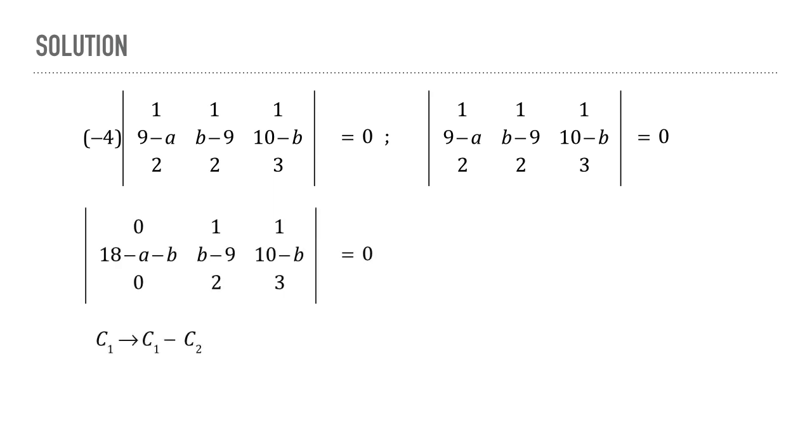Over here we have applied the column transformation c1 transforms into c1 minus c2. Now expanding this by the first column we find that this is what we get, which can be written down like this.